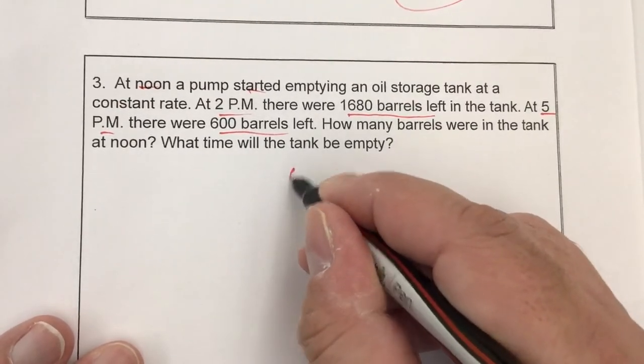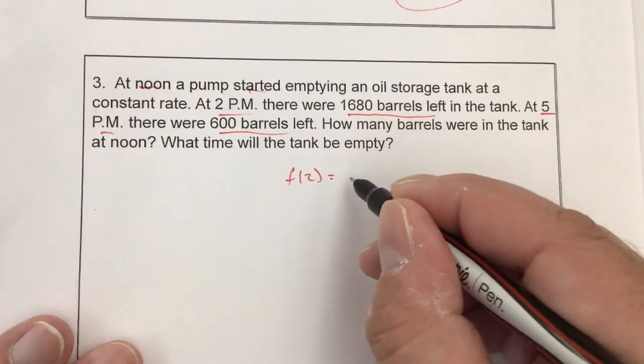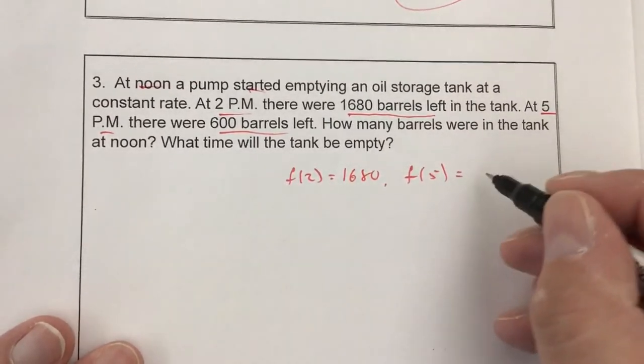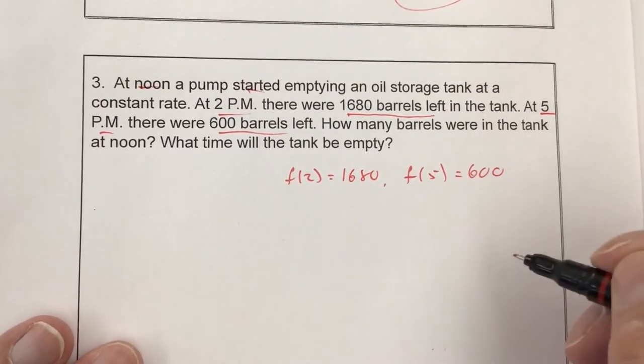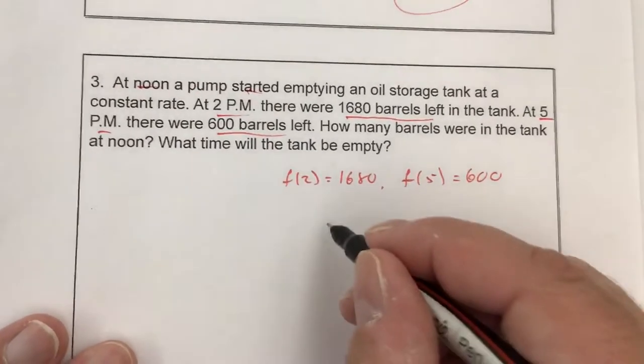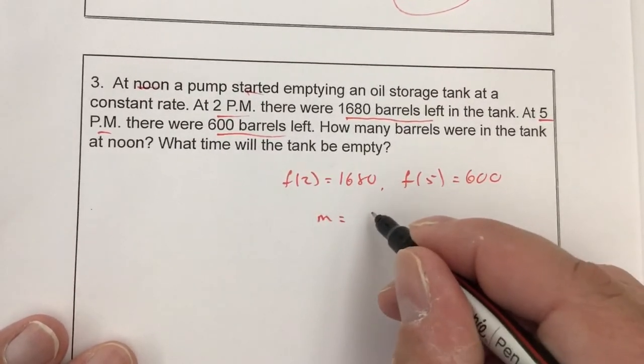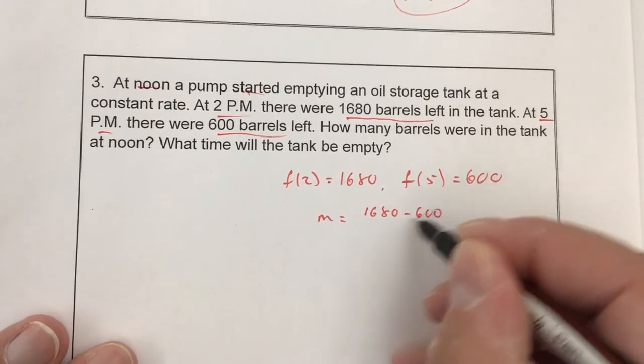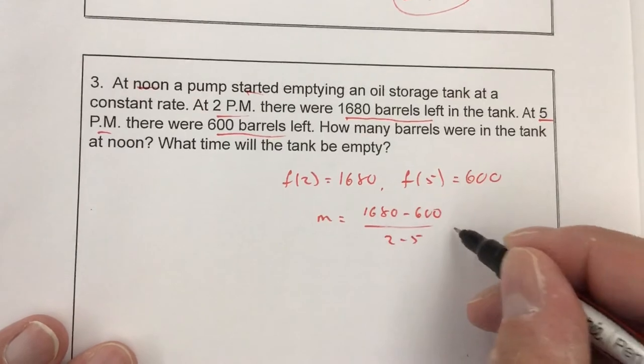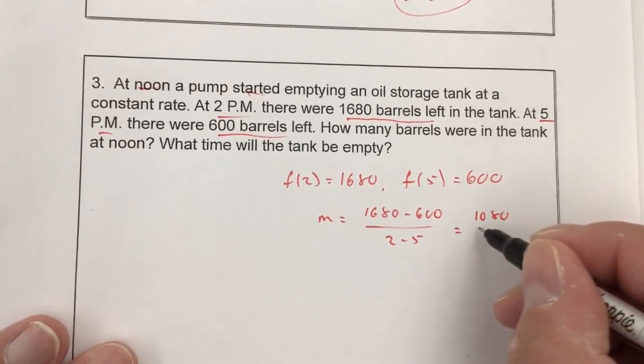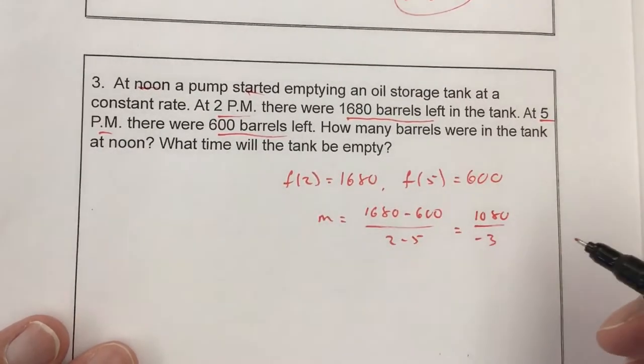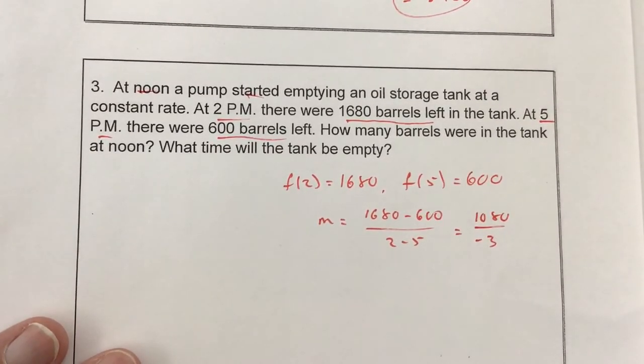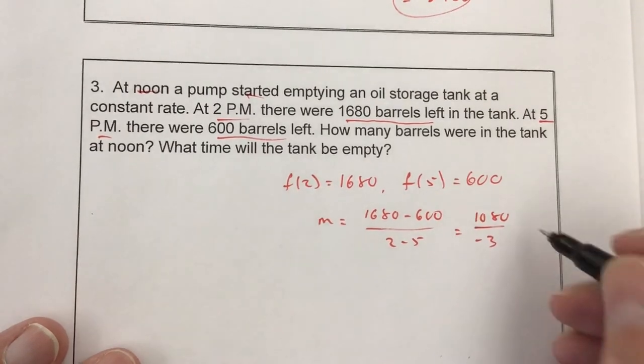So I can say that f(2) equals 1680, and f(5) equals 600. Now I can find my slope. So let's see, 1680 minus 600 over 2 minus 5. That's going to be 1080 divided by negative 3, which is negative 360.